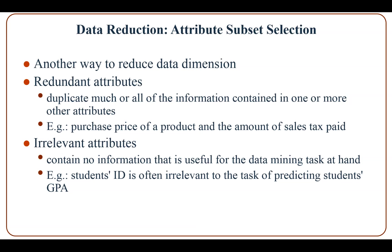Attribute subset selection is another strategy to reduce data dimensions. Redundant attributes duplicate much of the information contained in one or more other attributes — for example, the purchase price of a product and the amount of sales tax paid. Irrelevant attributes contain no information useful for the task — for example, student ID is often considered irrelevant for predicting a student's GPA.